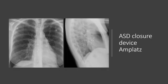Atrial septal defects are among the most common congenital heart defects. Left-to-right shunting can lead to right heart enlargement and dysfunction, with some patients eventually developing pulmonary hypertension. Closure of the atrial septal defect is done surgically, or it can be done percutaneously with this device seen on the images. This is an ASD closure device, also called an AMPLATZ device.